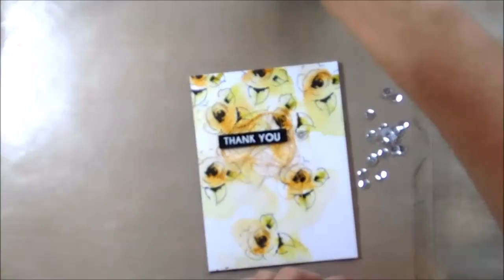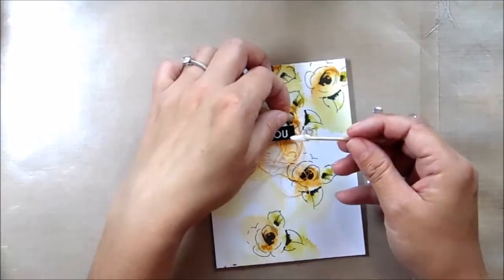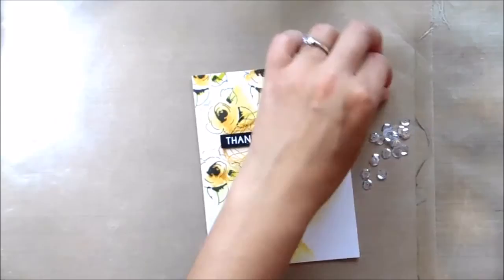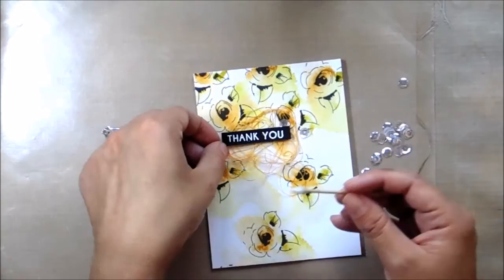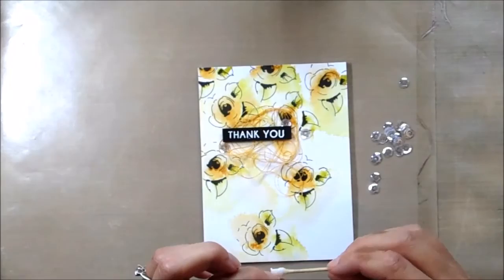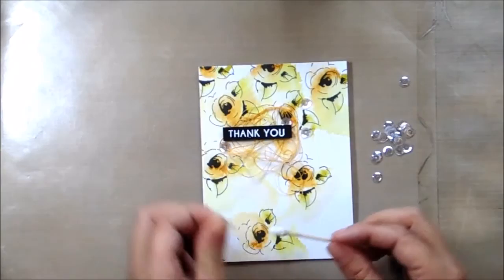Just for some sparkle, I'm going to add some Pretty Pink Posh sequins with some multi-medium adhesive. I add mine by adding it onto a cocktail stick and then placing the sequin down in place. And I'm just going to do it around the sentiment. Putting it over the thread as well will help the thread stay in place where you placed it. One more I think.